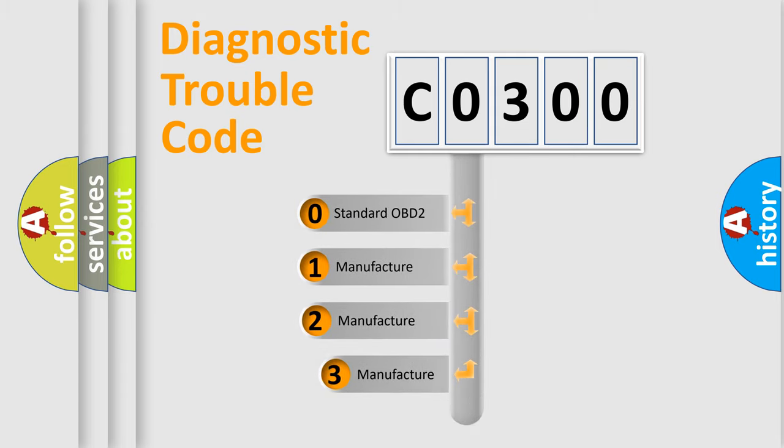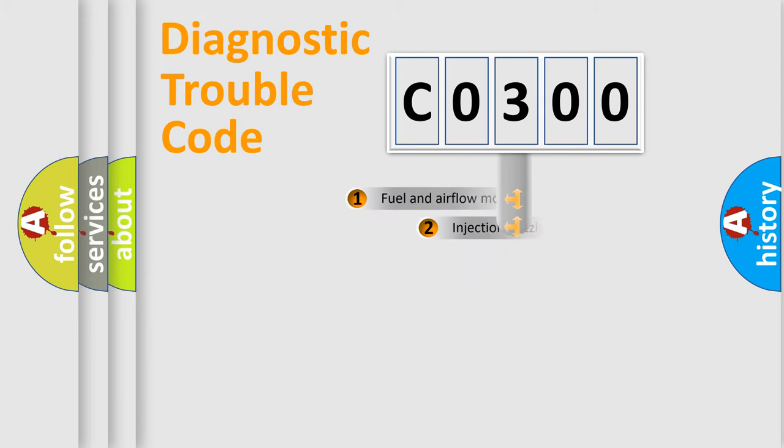If the second character is expressed as zero, it is a standardized error. In the case of numbers one, two, three, it is a manufacturer-specific expression of the car error.